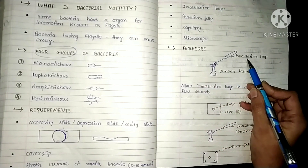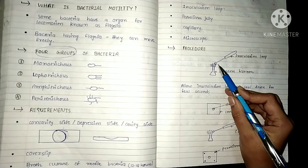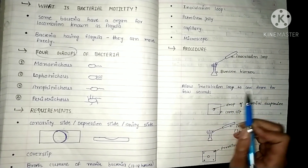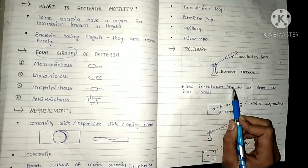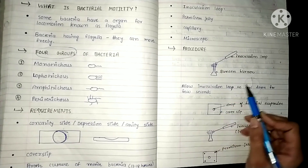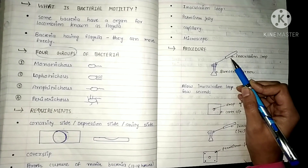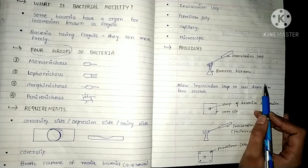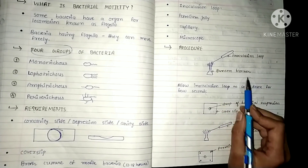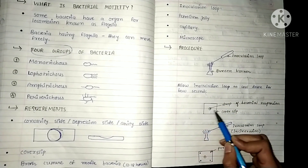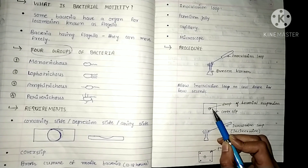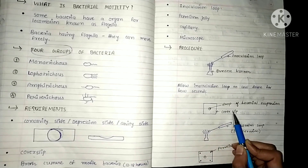For the procedure, first take an inoculation loop and heat it in the flame of a Bunsen burner, then allow it to cool down for a few seconds. This step is very important because if you dip a hot inoculation loop into the bacterial suspension, the bacteria will die and you may not get a result. After cooling, take a cover slip and apply a small drop of bacterial suspension at its center using the sterile inoculation loop.